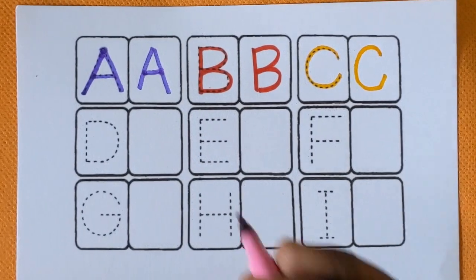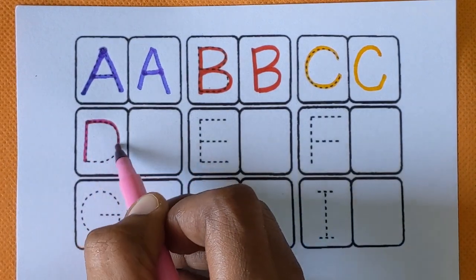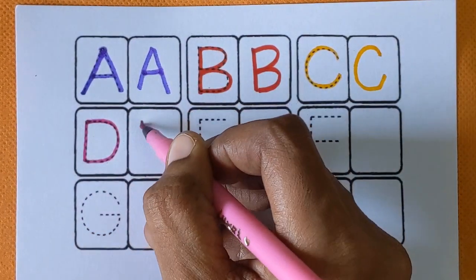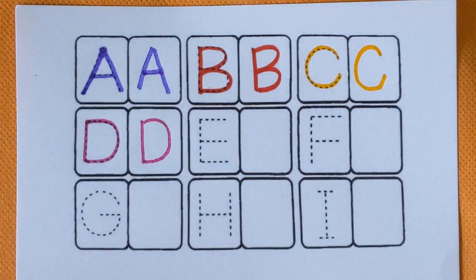After C, next alphabet is D, D for dolphin and D for deer, pink color.